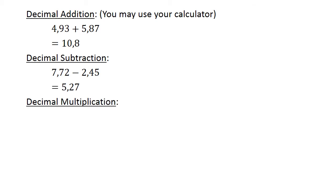Decimal multiplication. 0.29 times 0.02 equals 0.0058.